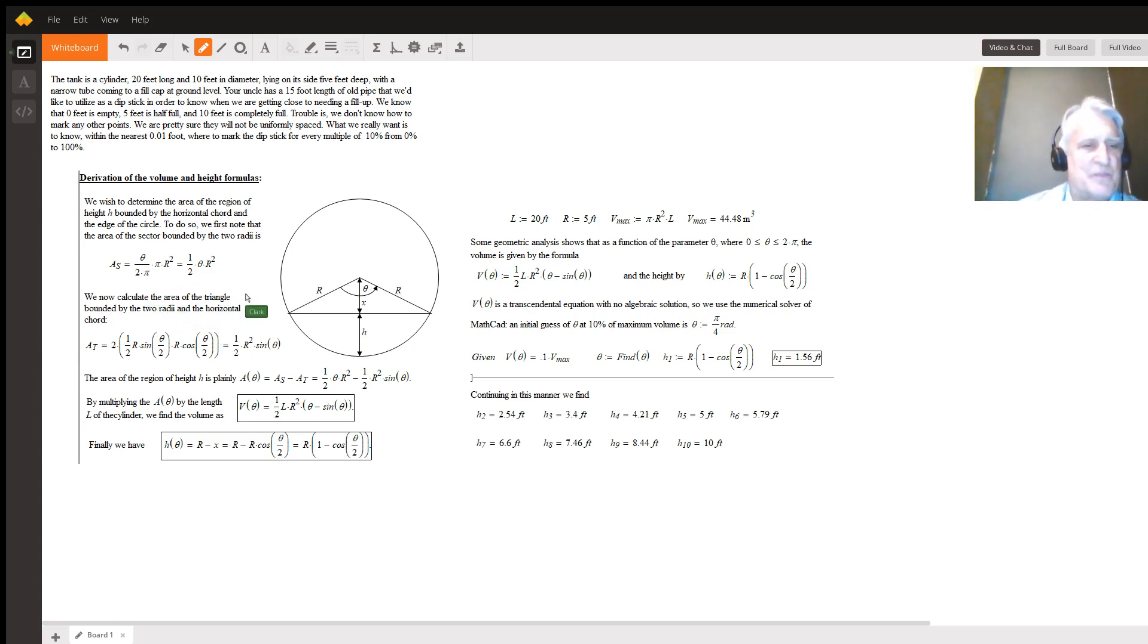It should be fairly clear that the area of the sector is theta divided by 2π, that is to say the fraction of a total circle times the area of a circle πr², and therefore is ½θr², where theta of course is in radians. We now calculate the area of this triangle by finding the area of each of these right triangles and multiplying by two.